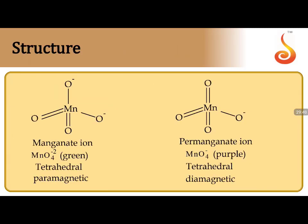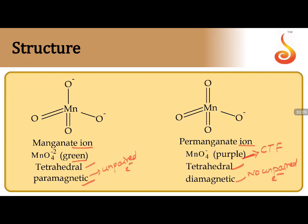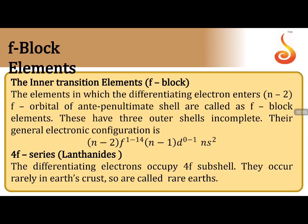Regarding structure: MnO₄²⁻ (manganate, green) is tetrahedral and paramagnetic due to an unpaired electron. MnO₄⁻ (permanganate, purple) is also tetrahedral but diamagnetic — no unpaired electrons. The green color of manganate is due to d-d transitions, while the purple color of permanganate is due to charge transfer phenomena between ligand and central metal ion.